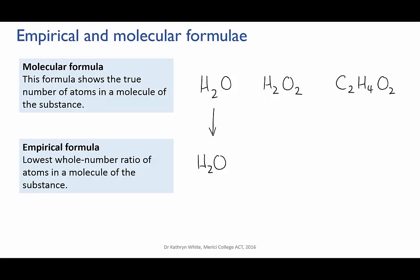But in hydrogen peroxide the ratio of H to O is 2 to 2, which simplifies to 1 to 1, so the empirical formula is HO.